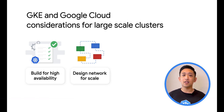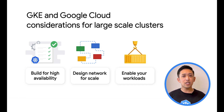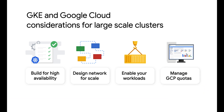The next is working through networking to ensure its various pieces can scale with your cluster. This includes IP address management, DNS, and load balancing. Third, we want to make sure that we can enable our workloads, ensuring that they have the resources that they need but also do not contend with one another. Finally, we want to ensure that quotas and limits are appropriately set to support large-scale GKE clusters. Together, applying practices across these four areas of consideration make a great starting point to building large-scale clusters in GKE. Let's now talk about those practices.